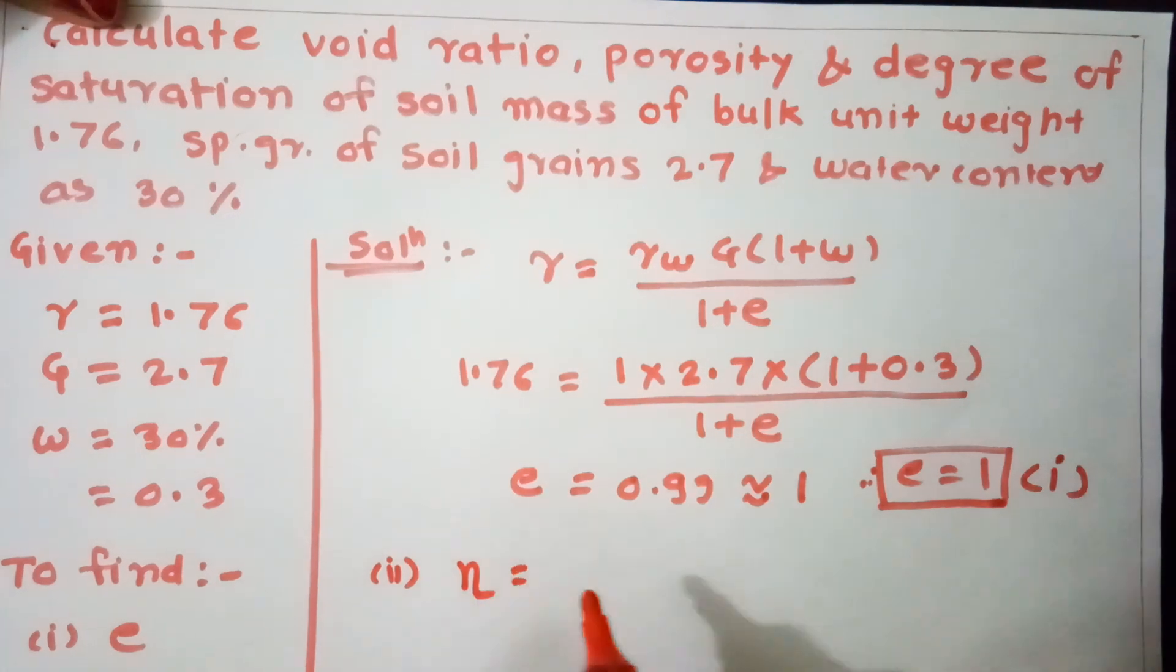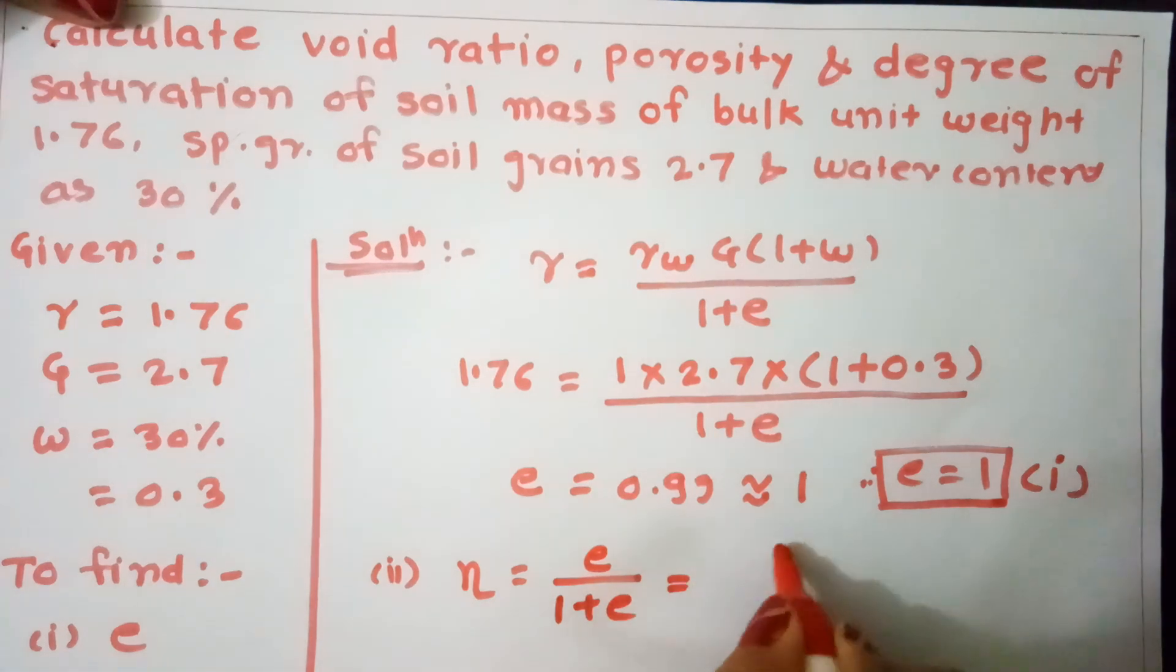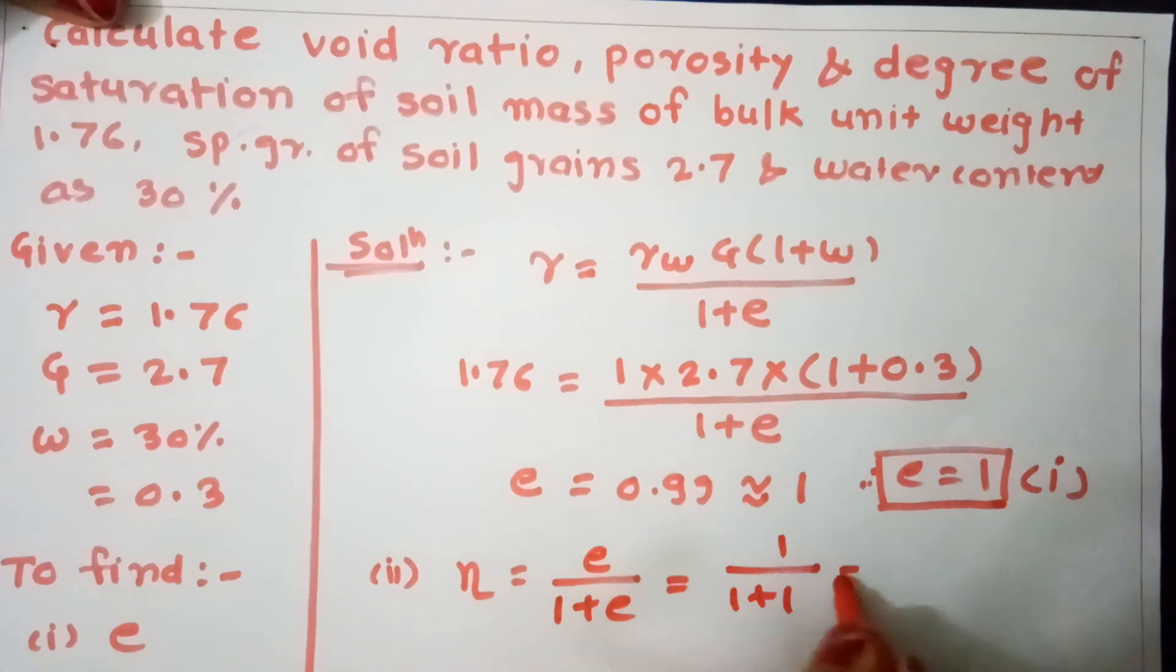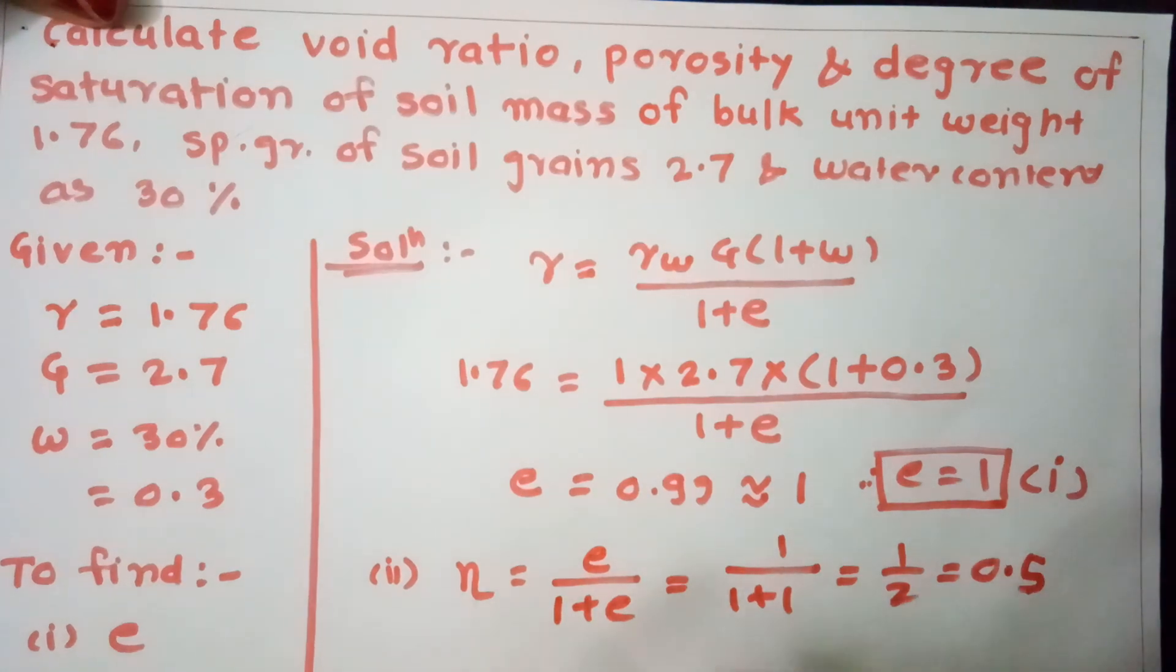Second, porosity η. We know the relation between e and η: η = e/(1+e). Since e = 1, we get η = 1/(1+1) = 1/2 = 0.5. Therefore η = 0.5 is the second answer.